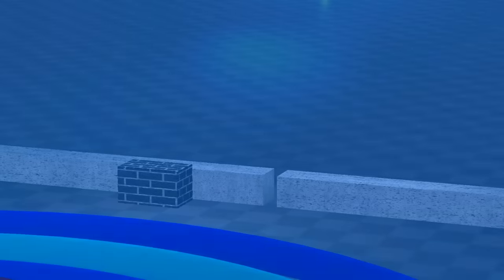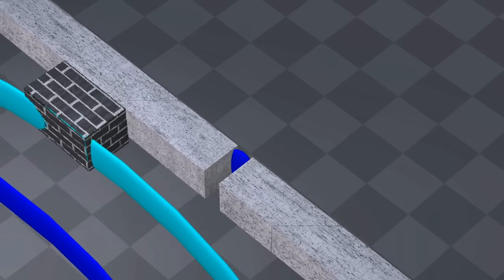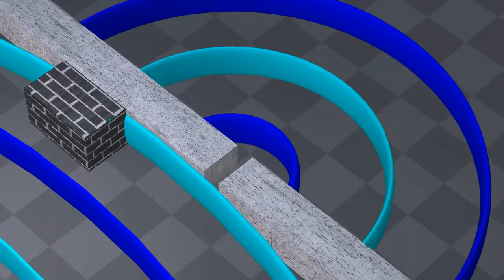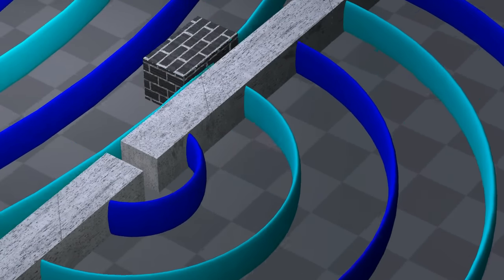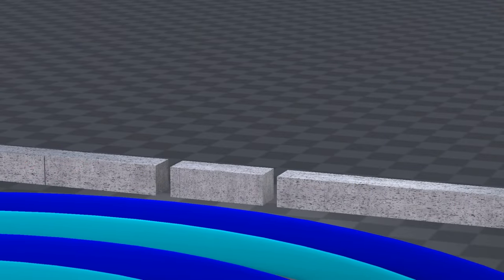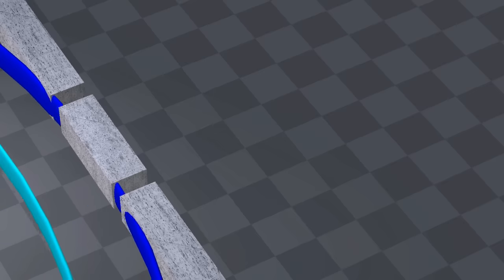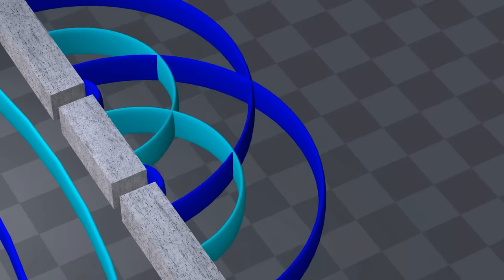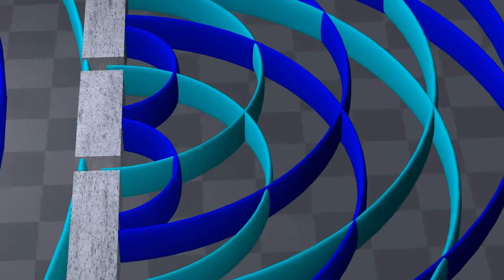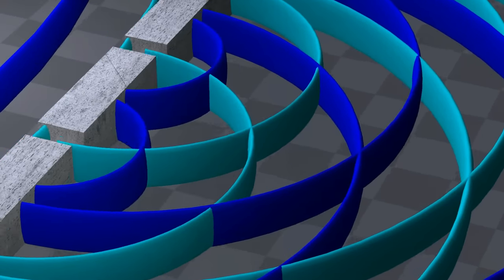Only one known phenomenon can explain this result: waves. When a wave passes through a hole, it spreads out on the other side. If there are two holes, two waves are produced. When you have two waves, they interact with one another. In some areas they strengthen each other, and in other areas they cancel each other out.